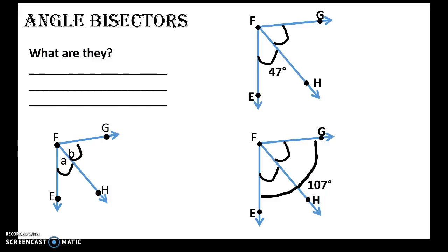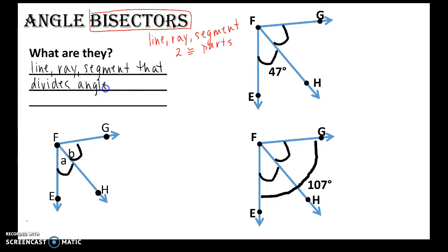Okay, last one, angle bisector. Now this term should be familiar. We saw segment bisector, and a segment bisector was a line, ray, or a segment that cut a segment into two congruent parts. So an angle bisector, instead of cutting a segment into two equal parts, it can be a line, ray, or a segment that divides an angle into two congruent angles.